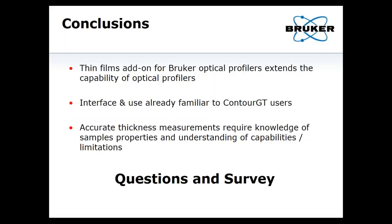In conclusions: the thin films package adds quite a bit of capability and flexibility to optical profilers. It's doing a lot of the work of another piece of capital equipment using the same interface you've already been trained on. One tool doing two jobs means no duplicate training or safety procedures. It's accurate to within usually less than 1% for films over 100 nanometers, and it gives quite a bit more information about your samples — especially coatings, photoresist layers, and transparent MEMS.